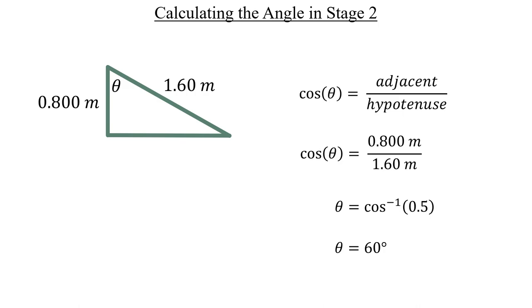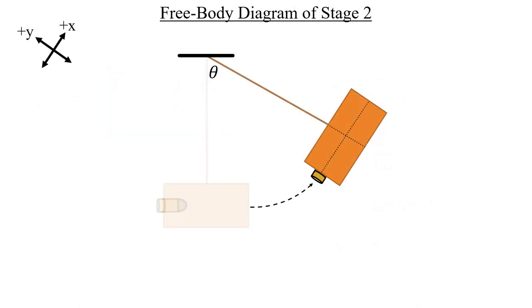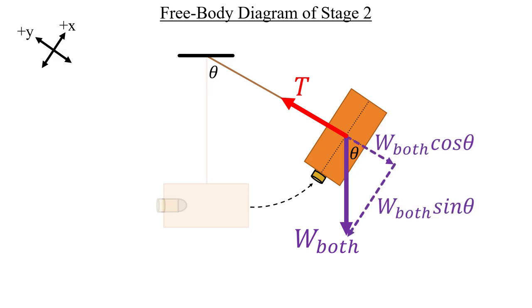Now we can draw our free body diagram of stage two, and notice that the axes are now altered to be parallel and perpendicular to the direction of the swinging movement. Regarding our forces, we have the weight of both objects, our conservative force, pointing downwards, and the tension in the chord points towards positive y. Since the weight doesn't lie along our axes, I'll insert the angle and break that vector up into its cosine and sine components.